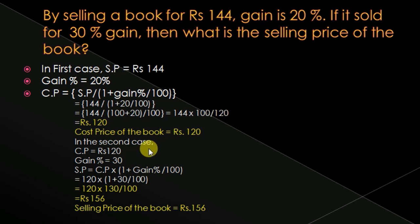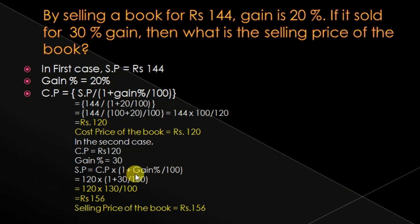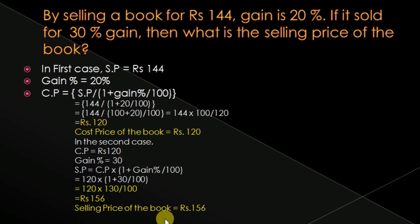Now in the second case, gain percentage is 30% and cost price is Rs. 120. Selling Price = 120 × (1 + 30/100) = 120 × 130/100 = Rs. 156. So the selling price of the book is Rs. 156. If you understand the question, you can apply the values and get the answer.